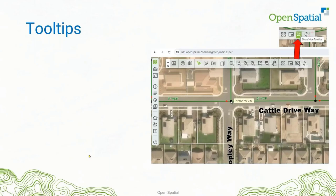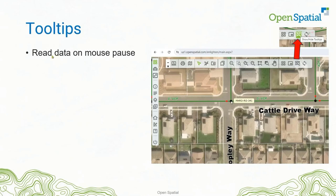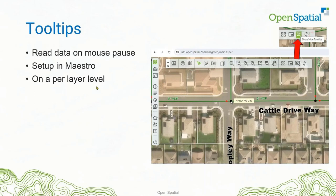Let's talk about tooltips — that's really the heart of the matter. In the tooltip, we can link straight to the advanced form. Tooltips do a database read as you hover, on mouse pause. You set that up in Maestro where you define the layer. The tooltip is configured on a per-layer level — not per theme within a layer, but per layer. By default it's active as you move around and you can get the tooltip. You can also turn tooltips on and off — there's an icon for show/hide tooltips.